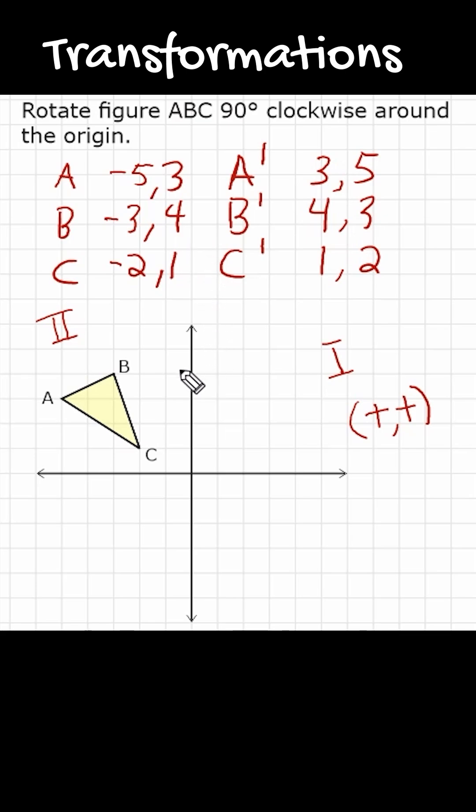So let us go ahead and plot those coordinates. Point A is going to be at 3 and 5. So our new point A is going to be located right here. B is going to be at 4 and 3. So that is our new point B and C is at 1, 2, which is right here. And this is exactly where our rotated shape is going to end up at.